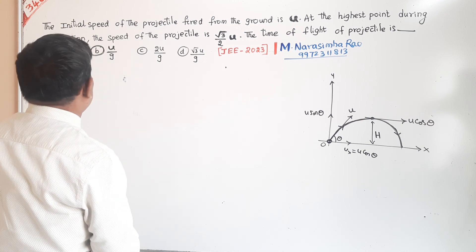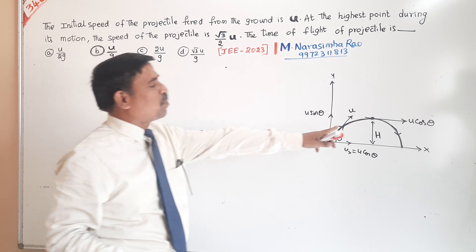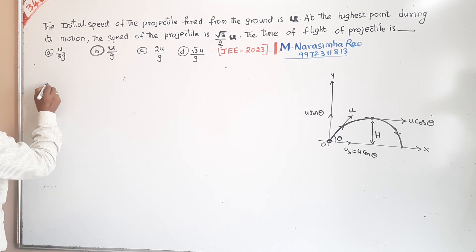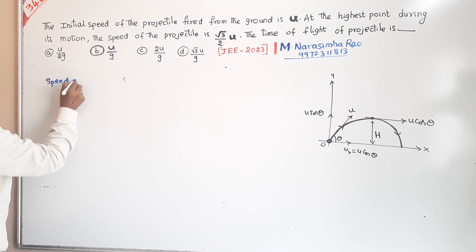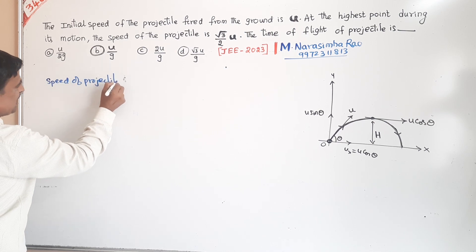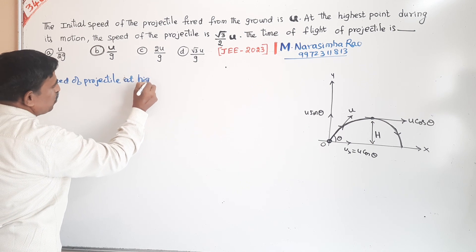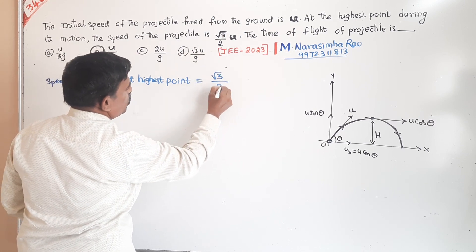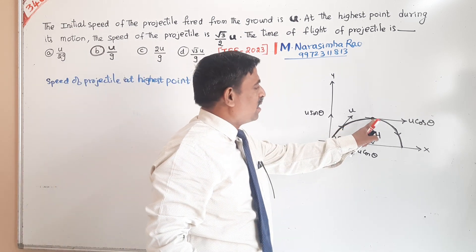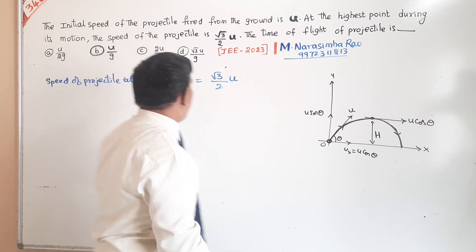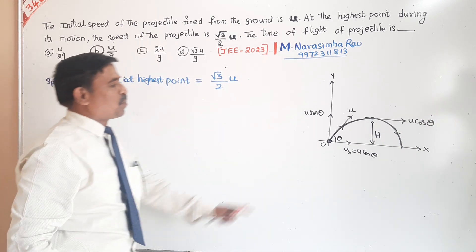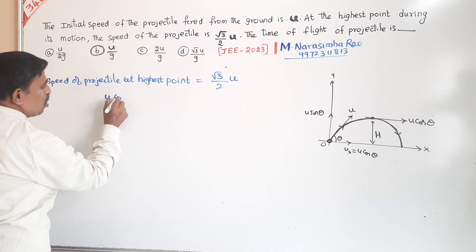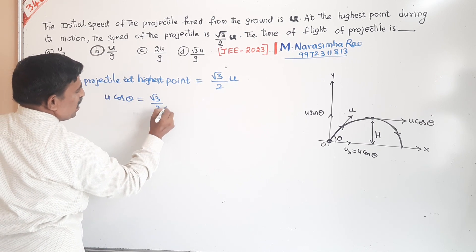They have given one condition: the speed of the projectile at the highest point. At the highest point — which is the maximum height — the vertical component of velocity is zero, so the speed equals only the horizontal component, U cos theta. Therefore, the speed of the projectile at the highest point is U cos theta.